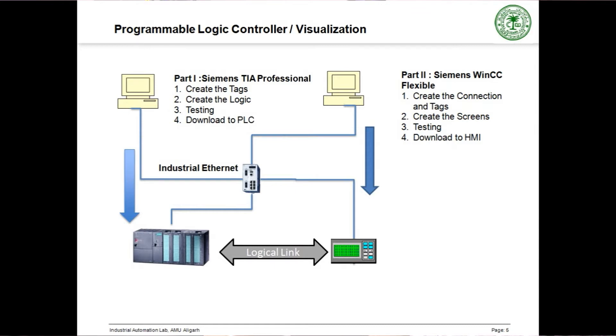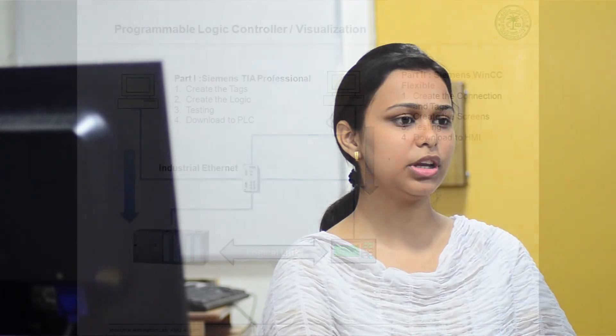Now let's see how this is all achieved in programming. The first step involves writing the program, testing it, and downloading it to the PLC. The second step involves creating the screen and monitoring the operation by downloading it to the HMI. Now let's see each one of these separately.